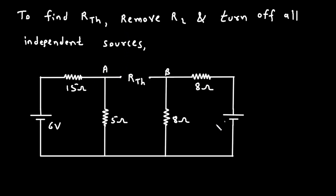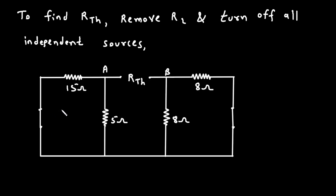We also have to turn off all the independent sources. When we turn off a voltage source, it will be replaced by a short circuit. When we turn off or replace the voltage source, we replace it by a short circuit. And when we remove or replace a current source, we replace it by an open circuit.